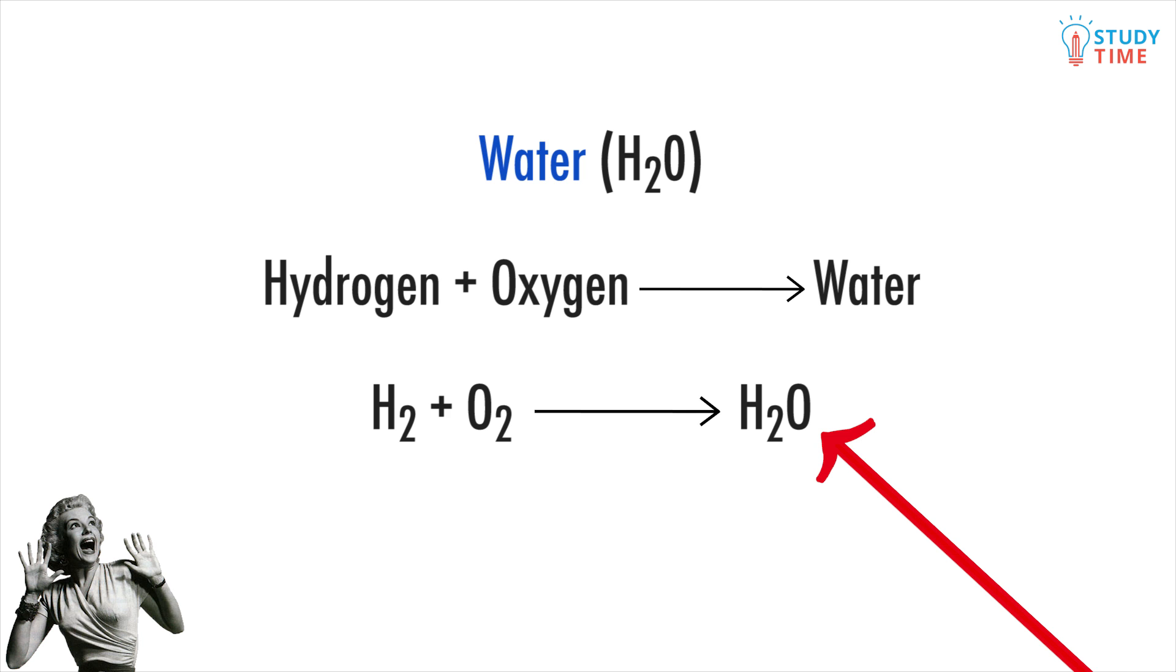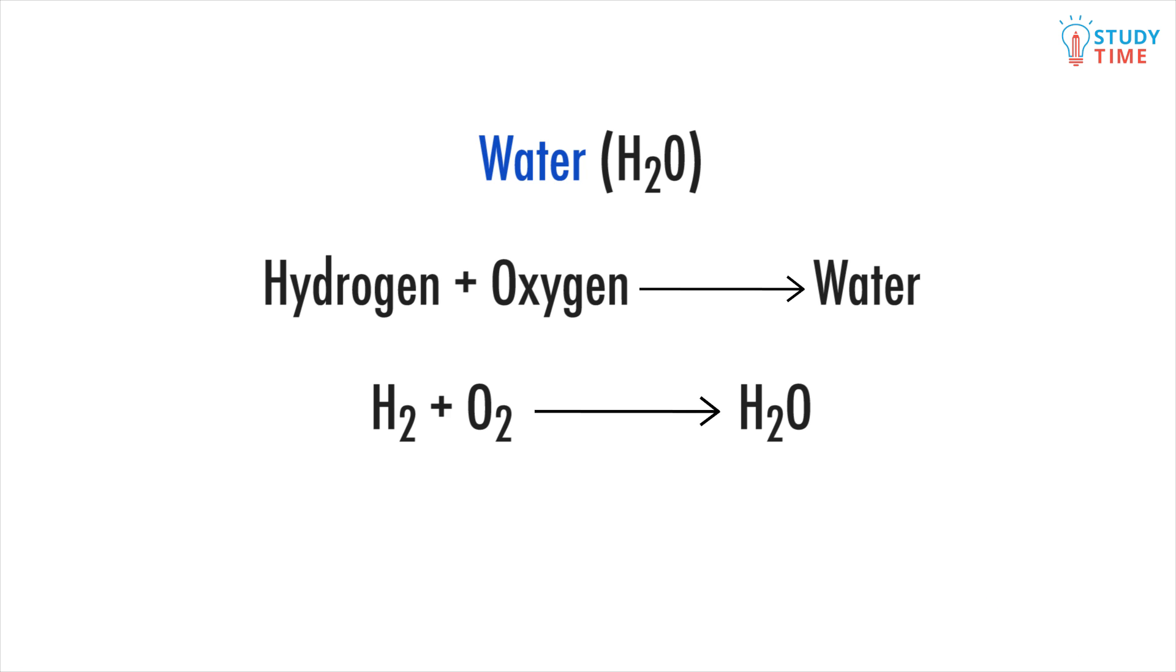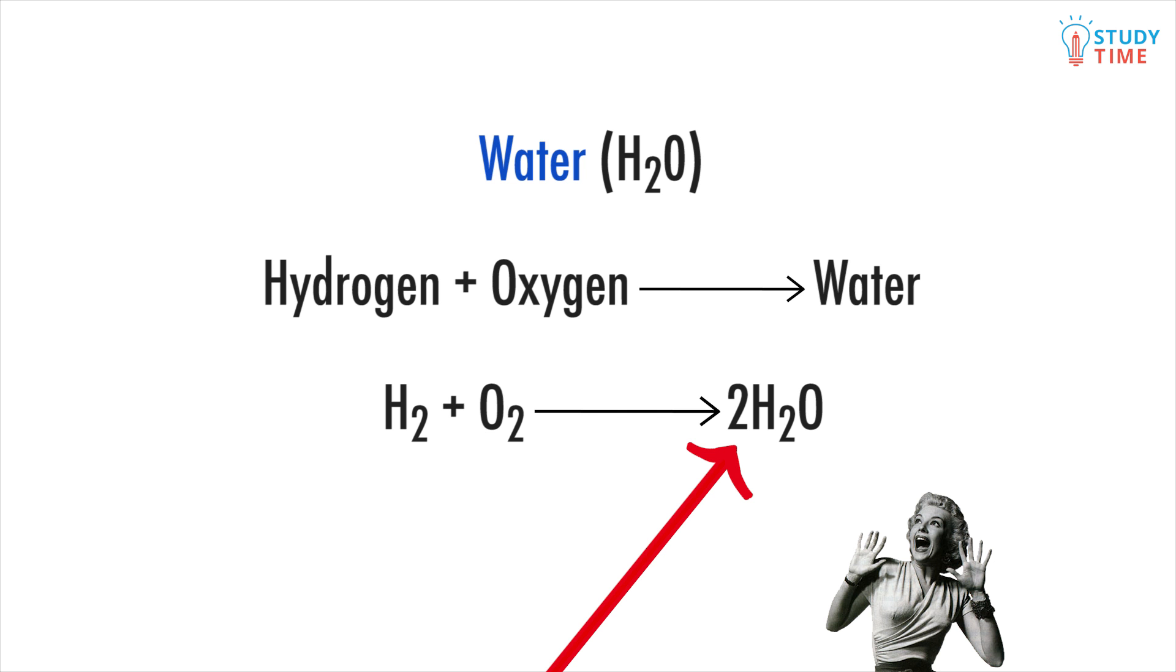We can fix this by balancing the equation. Let's write a 2 in front of the water molecule. Now there's 2 oxygen atoms on each side. But now we've got 2 hydrogen atoms on the left, and 4 on the right. Hydrogen atoms are just appearing from nowhere.